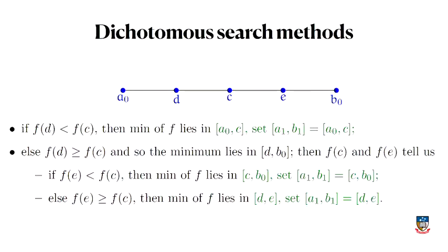In the dichotomous search method, the nice thing about it is that by choosing three points—d, c, and e—within the interval a to b, if I equally space them within the center of this interval, then I get to halve the search interval each time.